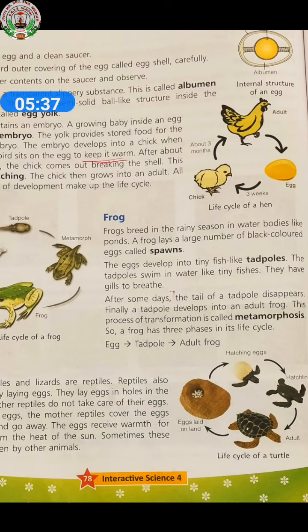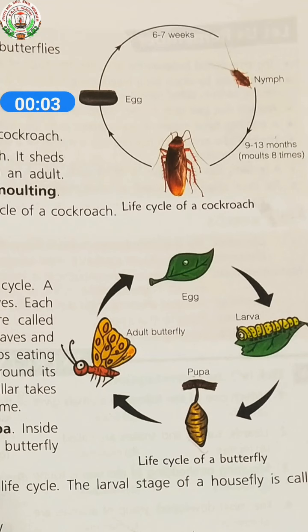Next are insects. All insects like cockroaches, house flies, and butterflies lay eggs.